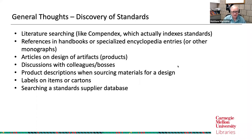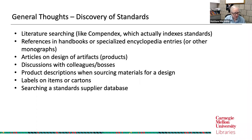There could be general research articles on the design of a particular product that mention applicable standards right in the design article. Colleagues or bosses might mention there should be a standard in place and may know it by name and number. Product descriptions when sourcing materials for a design may mention adherence to a particular standard. Labels on items may indicate the underlying standard. We also provide access to standard supplier databases — one we use a lot to acquire standards we don't already have is called Tech Street.